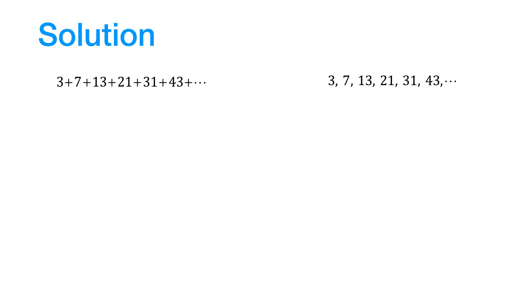These numbers clearly do not form an AP. So, let us look at the first differences. We get 4, 6, 8, 10, 12. Let us also look at the second differences. We find that they are all 2, which is a constant.